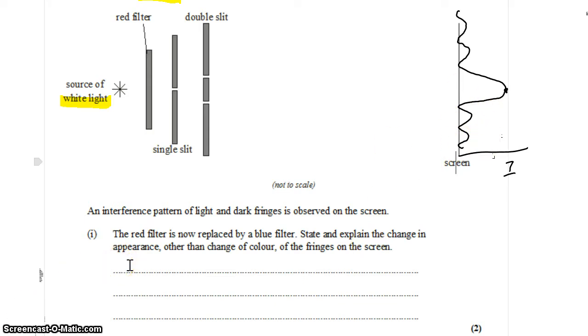Well, because the width of the central maximum is described by this equation, the angle to that minimum, so that angle theta, is determined by the wavelength of light divided by the width of the slit, or the distance between the slits, b.